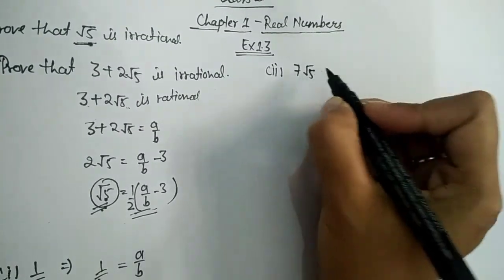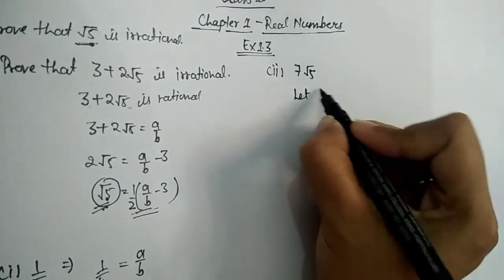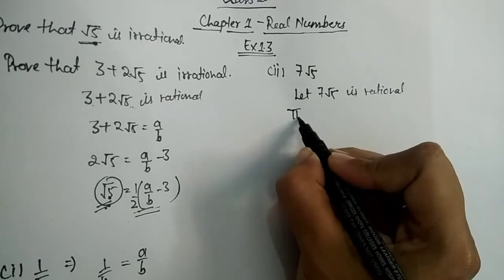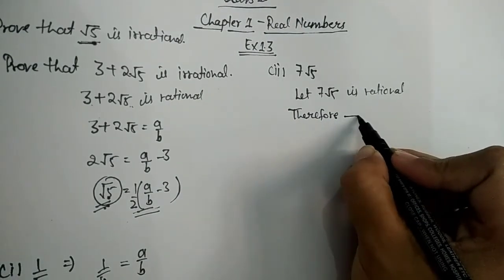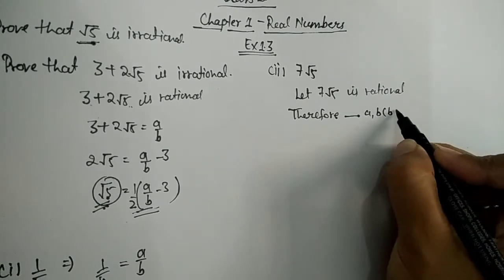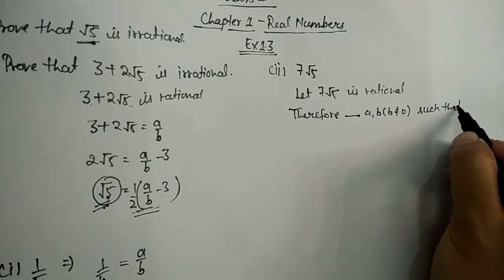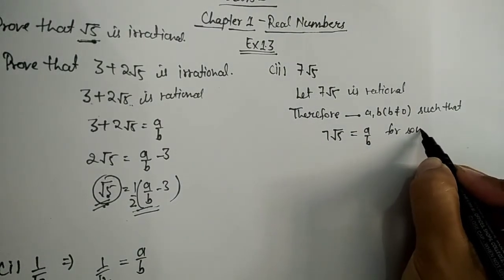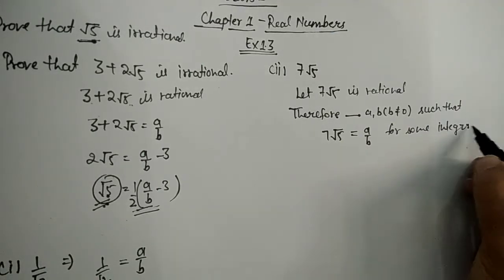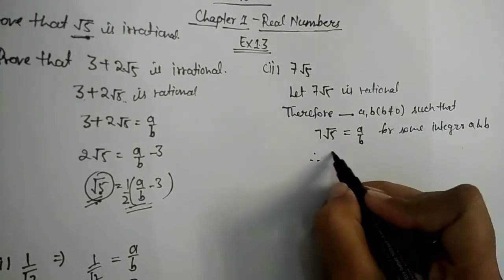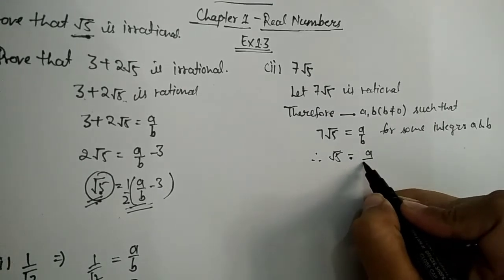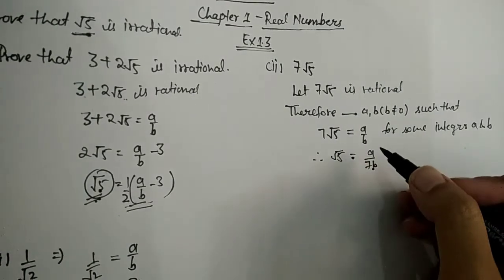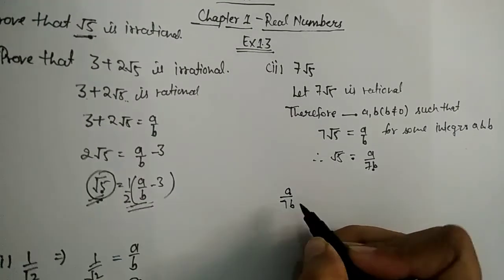The second part is to prove that 7√5 is irrational. Let 7√5 be rational. Therefore, we can find two integers a and b where b ≠ 0, such that 7√5 = a/b. Shifting 7 to the right side, we get √5 = a/(7b). Since a and b are integers, a/(7b) is a rational number.